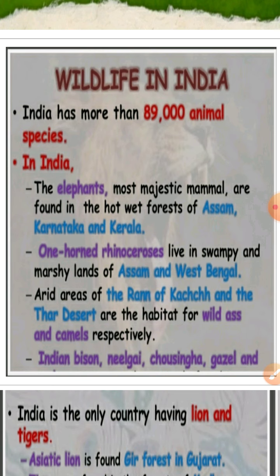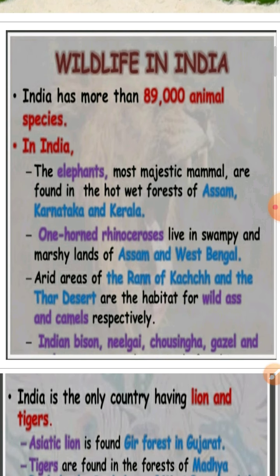The one-horned rhinoceros is a speciality of Assam. It lives in the swampy and marshy lands of Assam and West Bengal — particularly the Sundarbans delta of West Bengal and the swamp areas of Assam.